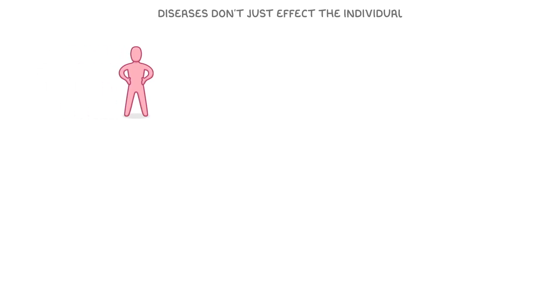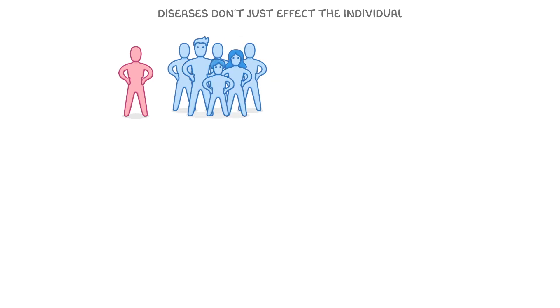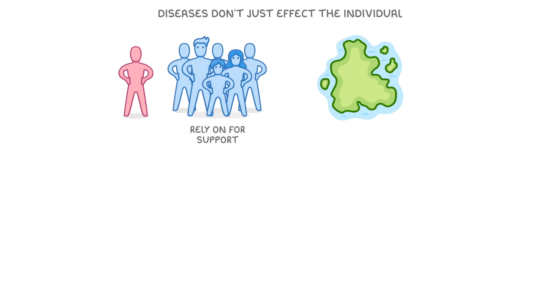One of the problems with diseases is that they don't just affect the individual who has the disease. They also impact their family, friends, and sometimes their entire country. For example, when somebody gets ill, they often rely on their friends and family to support them. And if they're really ill, they might not be able to work, which means that their whole family gets poorer.